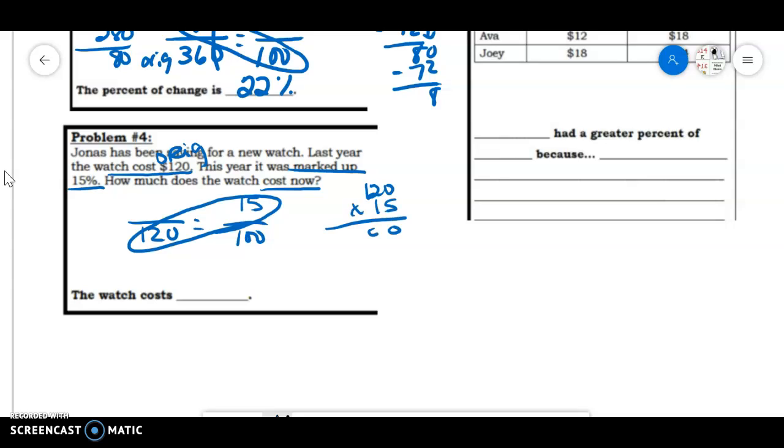120 times 15, make sure you use your placeholder, 1,800, and we're going to divide that by 100, so we can take off our zeros. And some of you put 18, but that doesn't make sense because it went up. This is, it went up $18. So now we need to add 120 plus 18, so now the watch is $138.